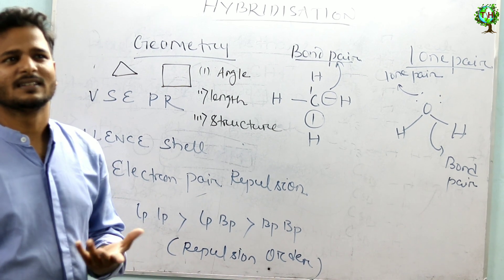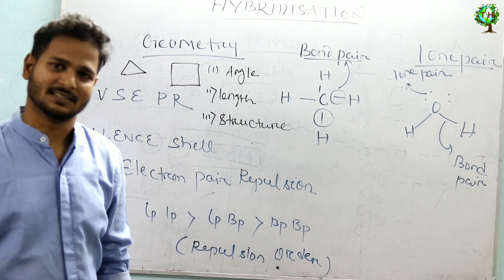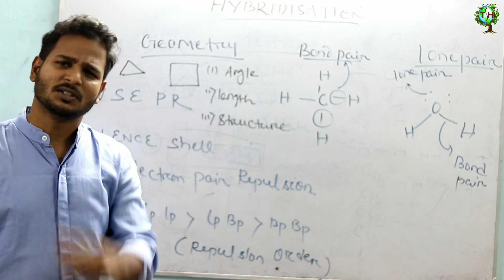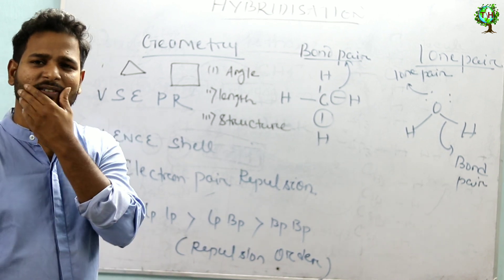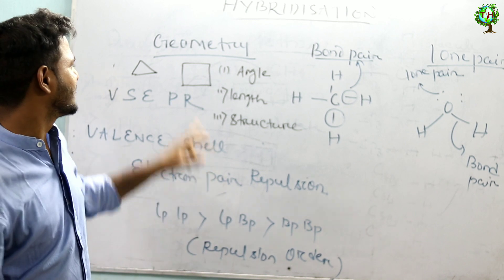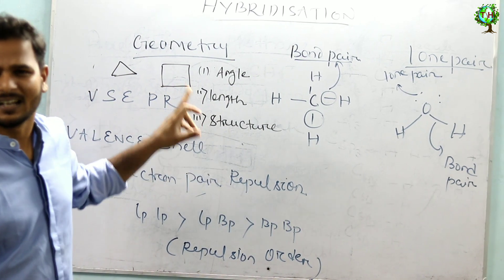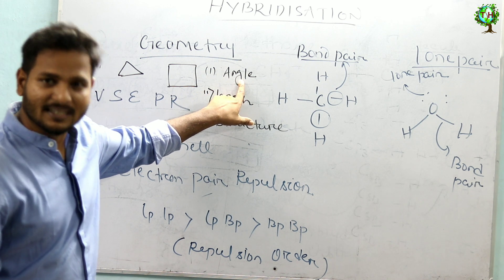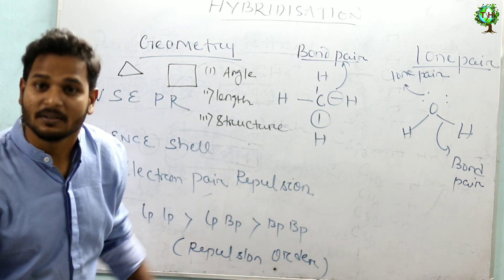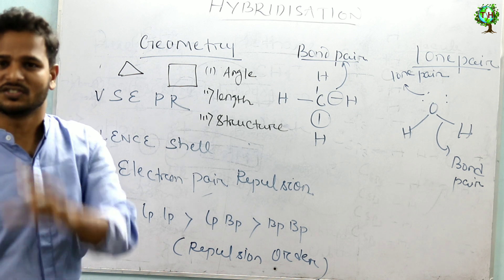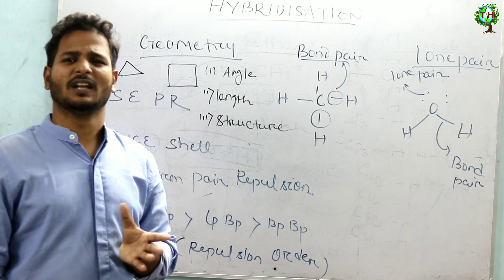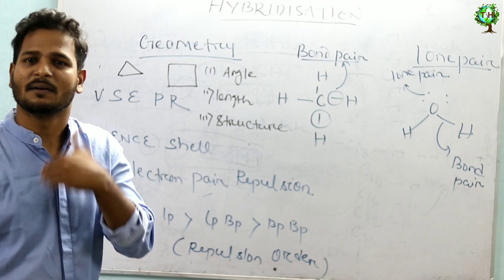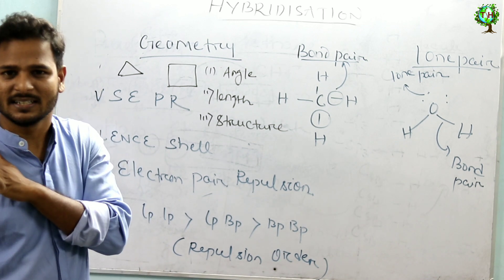Now the second question: why we study hybridization? Hybridization predicts geometry. What do you mean by geometry? In school days you studied geometry — geometry means angle, square, rectangle, rhombus, like that. That means they give angles, there is a length, and these are the structures. Geometry means angle, length, and structure. So every molecule has structures, they have angles, they have length — that is called bond lengths.